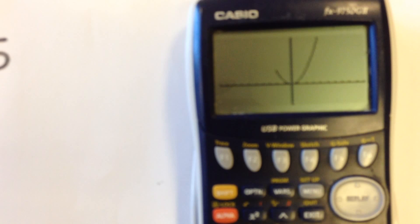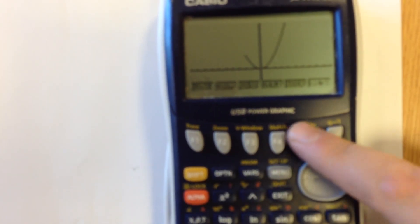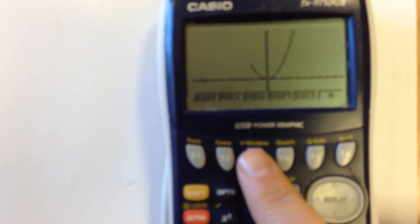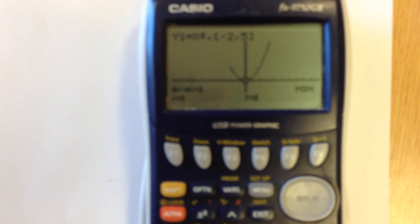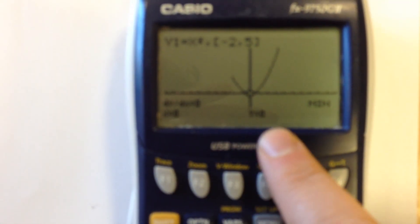So what we're going to do is we're going to use g-solve. So if I do shift and g-solve and I want to find a minimum, so press min. And there we go, it finds it. It's when x is 0 and y is 0.